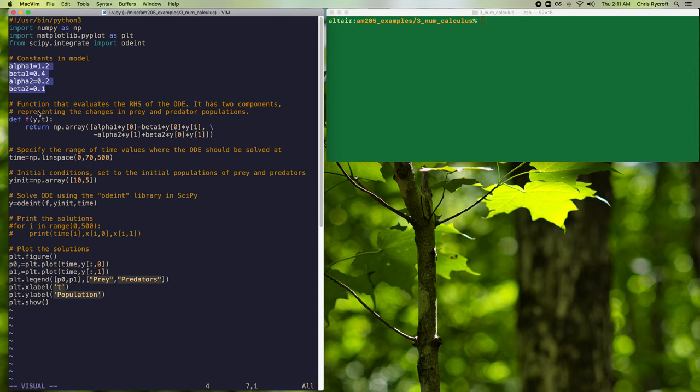And we'll define these here using non-dimensionalized units. We'll then write down a function f of y and t, following our standard notation that evaluates the right-hand side of our ODE system. And this has two components that represent the changes in the prey and predator populations. So our function will take in a two-component vector for the current prey and predator populations and also the time.